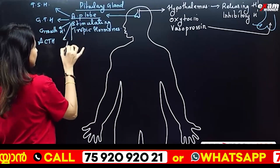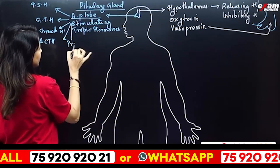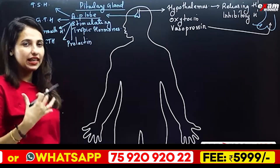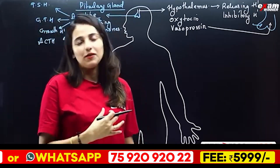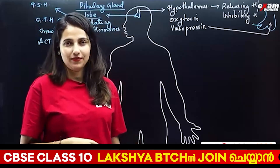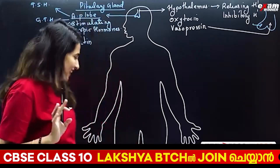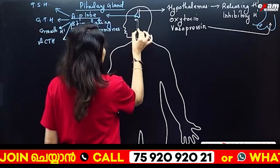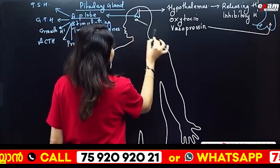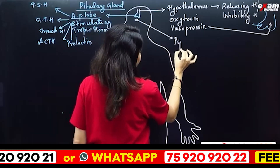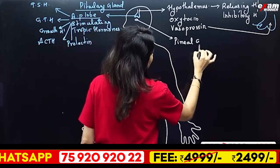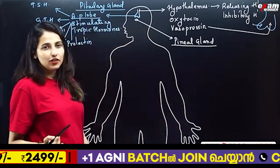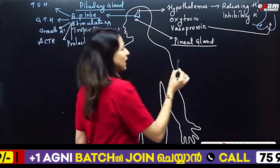And lastly, Prolactin — this is the milk-producing hormone. Then we have the Pineal Gland. The function of the Pineal Gland is to produce a hormone called Melatonin.